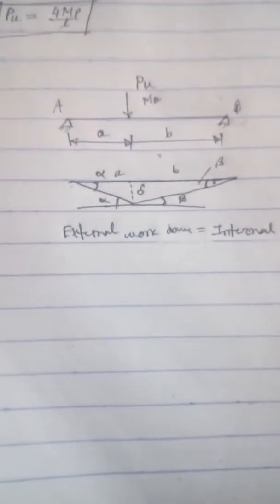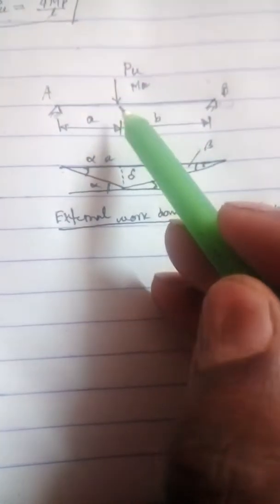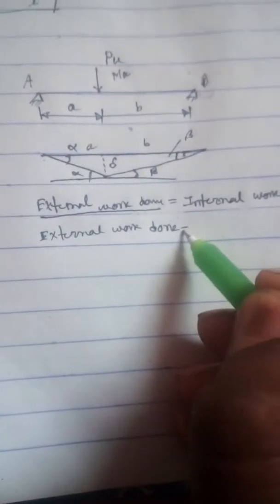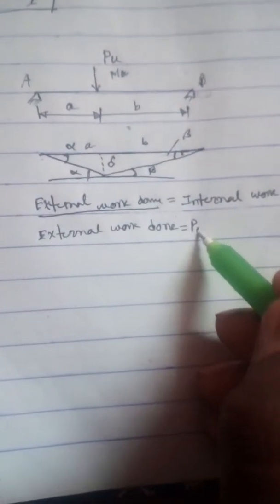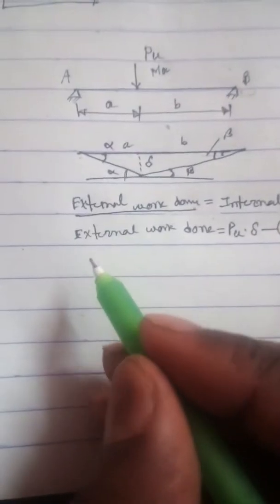First, let's find the external work done. External work done is the multiplication of the load applied and the deflection. So external work done equals Pu into delta. This is equation number one.